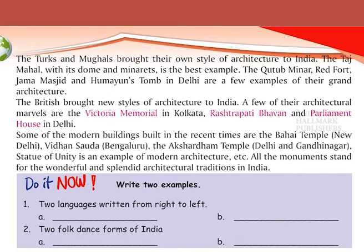The British brought new styles of architecture to India. A few of their architectural marvels are the Victoria Memorial in Kolkata, Rashtrapati Bhavan and Parliament House in Delhi. Some modern buildings built in recent times are the Baha'i Temple, Vidhan Soudha, the Akshardham Temple, and the Statue of Unity. All these monuments stand for India's wonderful and splendid architecture.